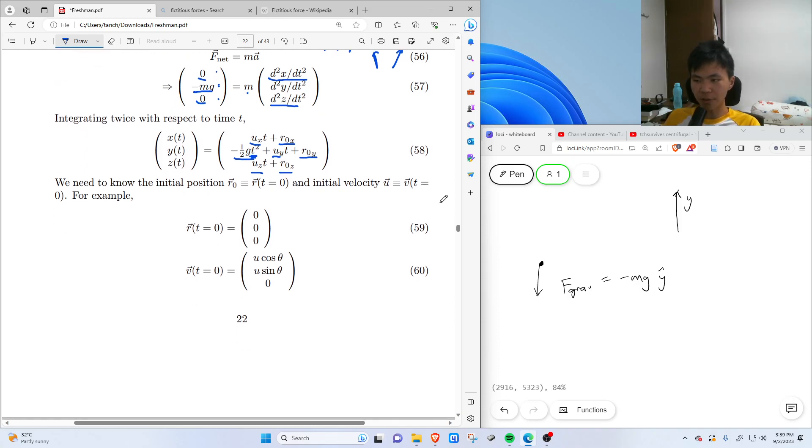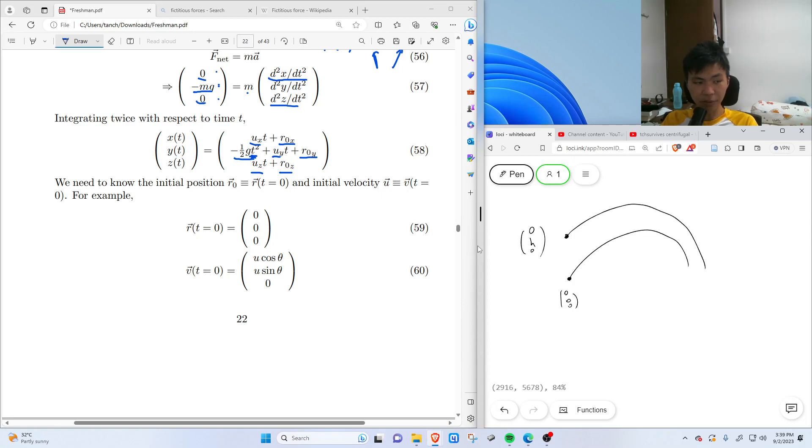So for most of projectile motion, usually we start off either at the origin, or we start off at some height H. So it's either 0, 0, 0 for the origin, or 0, H, 0, where H is some initial height that we start at. So in the case where it's 0, 0, 0, then substituting this into the initial conditions...